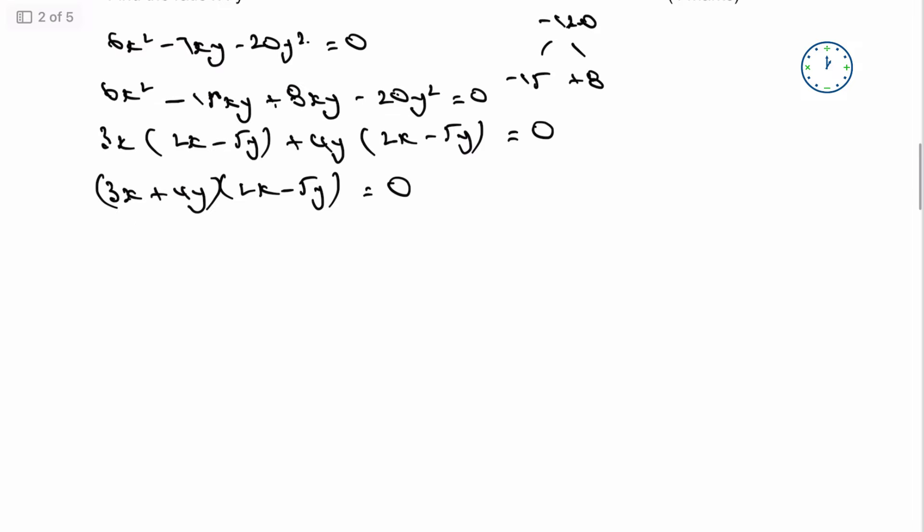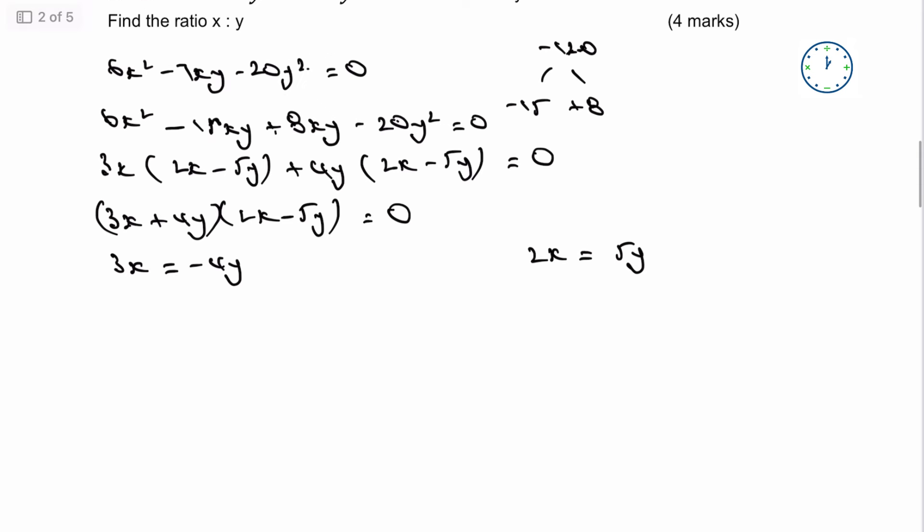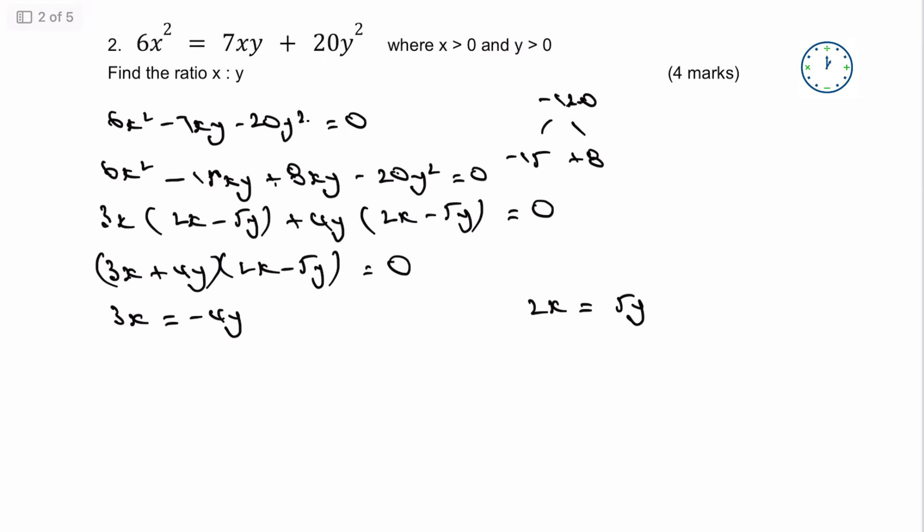So I've now got the value of 3x equals -4y. I've also got a value of 2x equals 5y. So what have we got there? Bearing in mind, we are looking for the ratio x:y, and we're also told that x and y are both positive.